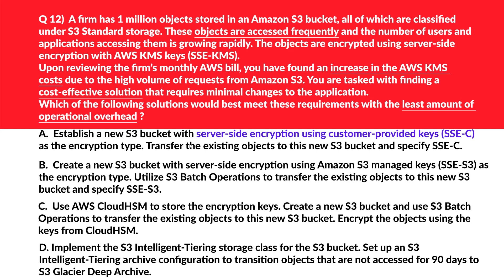Let's look at this question. Option A: create an S3 bucket with server-side encryption using customer-provided keys, also known as SSE-C. Using SSE-C would reduce AWS KMS cost, but it increases operational overhead, which is against the goal — so it's incorrect. Option B: create an S3 bucket with server-side encryption using Amazon S3 managed keys, also known as SSE-S3. This meets requirements with least operational overhead. Amazon S3 managed keys are free and incur no additional cost, so this is a potential answer.